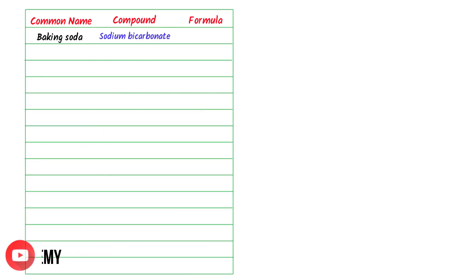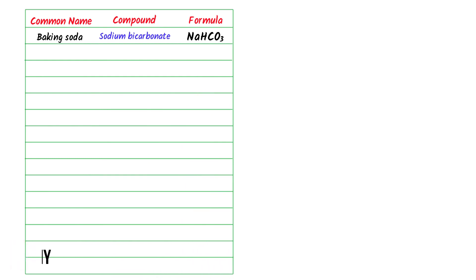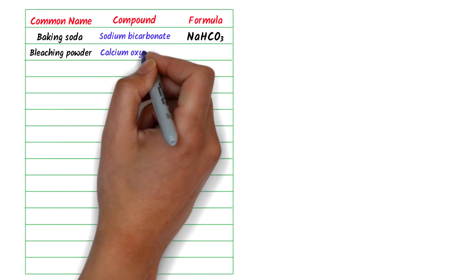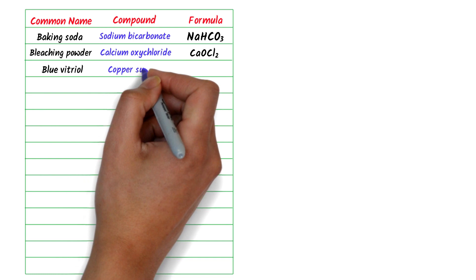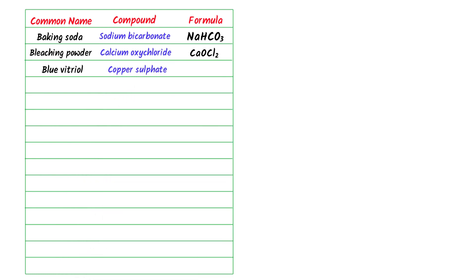The first common name is baking soda — it is sodium bicarbonate and its chemical formula is NaHCO3. The second is bleaching powder — it is calcium oxychloride and its chemical formula is CaOCl2. The third is blue vitriol — it is copper sulfate and its chemical formula is CuSO4.